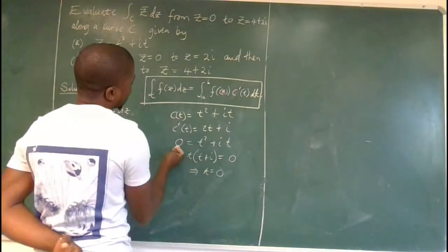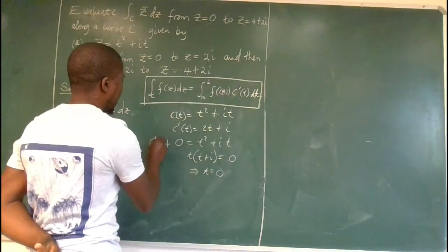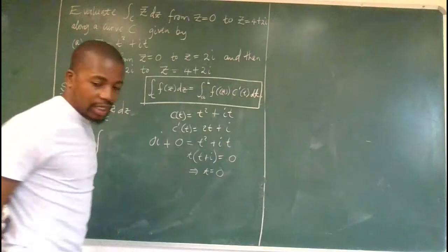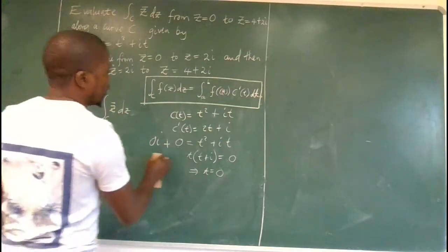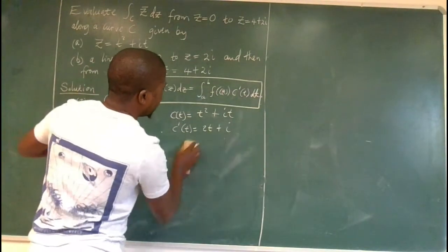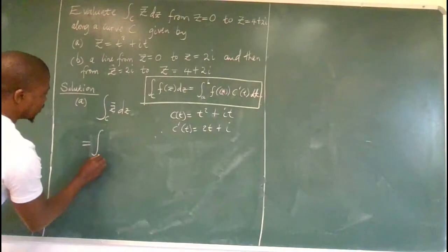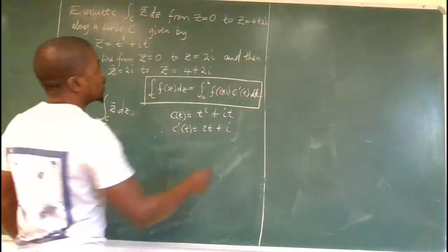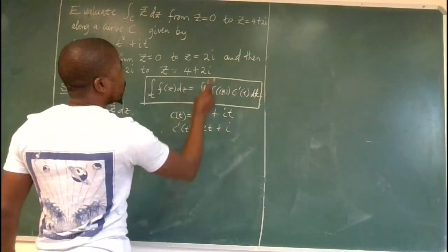Of course, it's 0 plus 0i here. So in any case, t is 0. So we have our starting point. So this integral is starting from 0. Now, let's see. Where are we ending? 4 plus 2i.